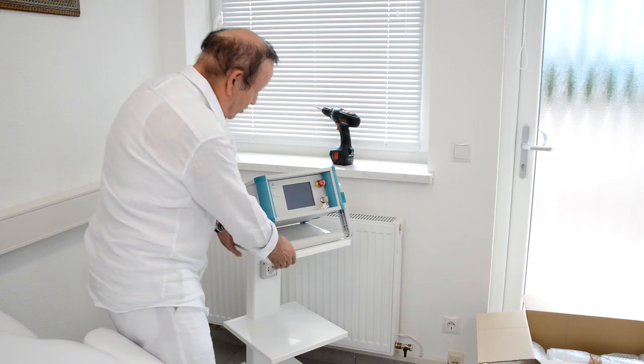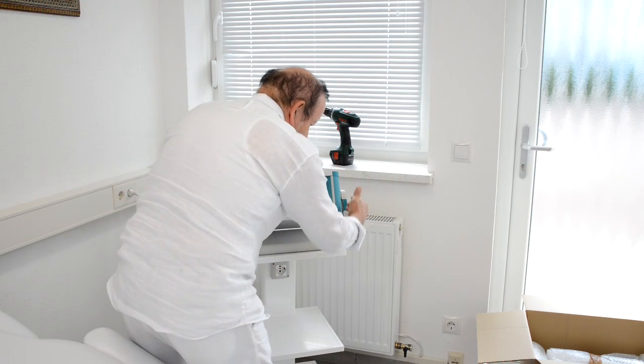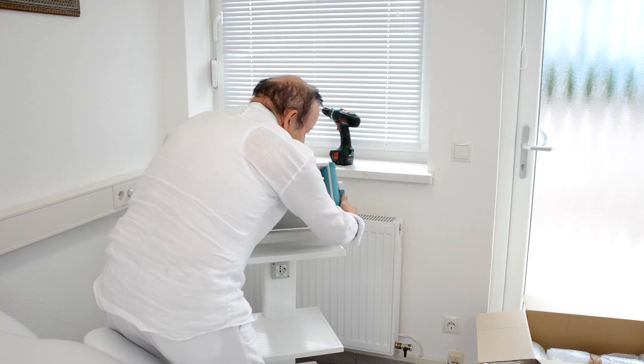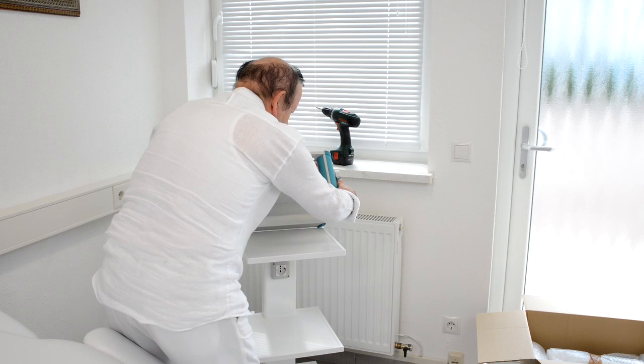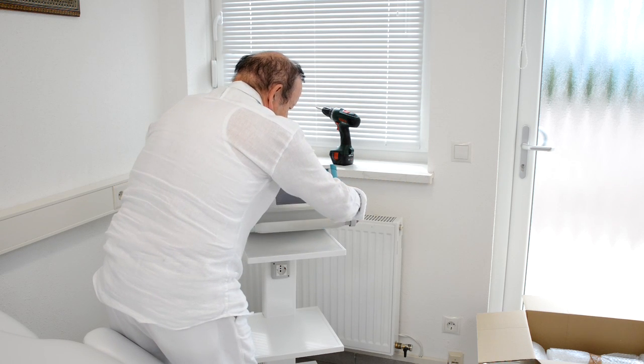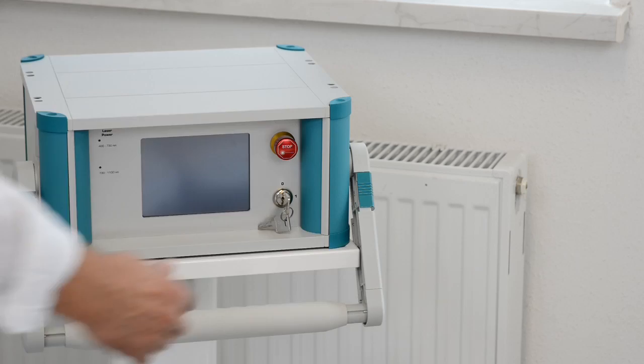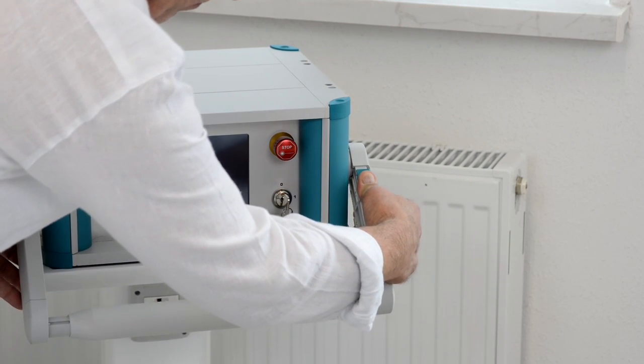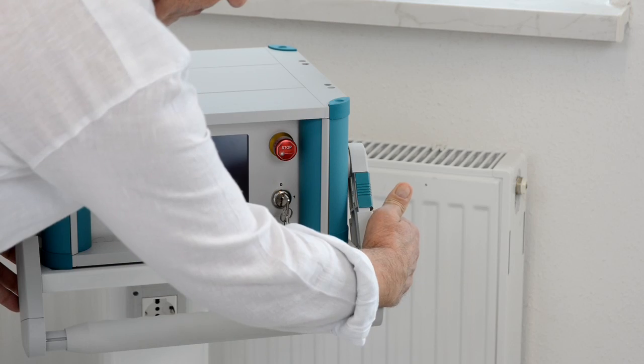You see this is the electronic device and this is the grab handle. With this one you can bring it to a different position. If you want to change the position, you have to pull these green pieces back with your thumbs and then you can move it.